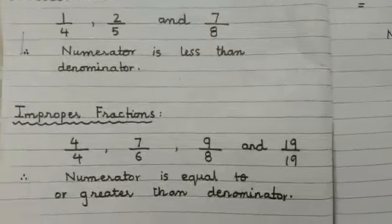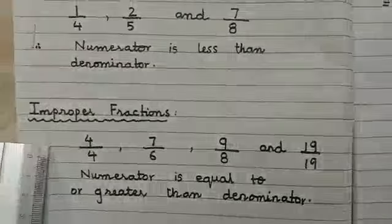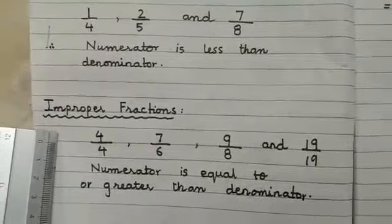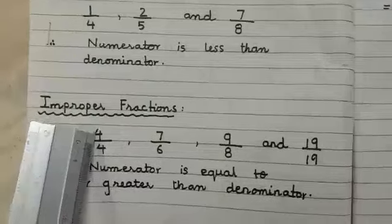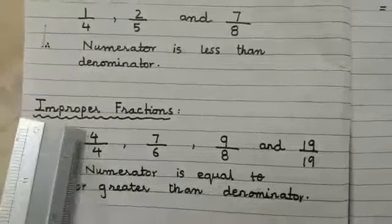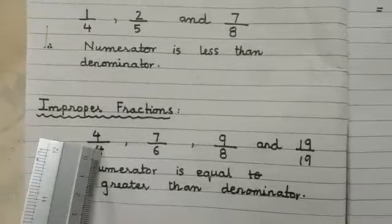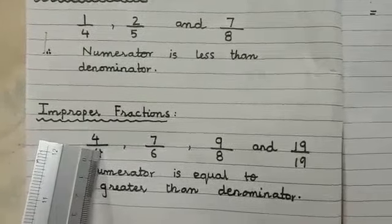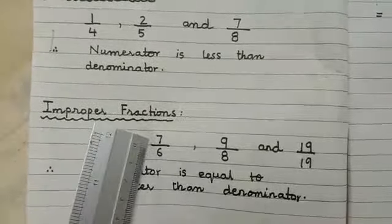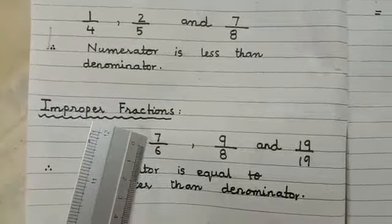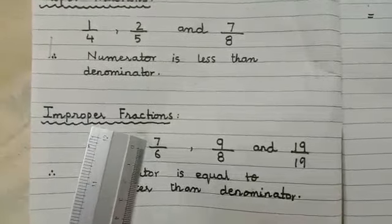What are improper fractions? Improper fractions are those fractions in which the numerator is equal to the denominator, or the numerator is bigger than the denominator.